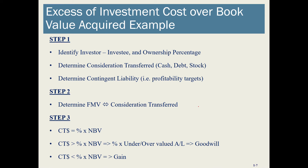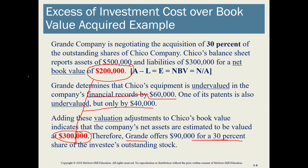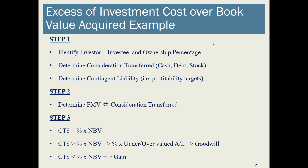Before we go into what happens to this difference, let's look at the steps needed to analyze these transactions. We'll divide this into three steps. In Step 1, we identify who is the investor and who is the investee, and what is the ownership percentage being purchased. In this case, Grande is the investor and Chico is the investee. The percentage may not always be given directly — it may be stated as total shares outstanding and shares purchased, requiring you to calculate the percentage.